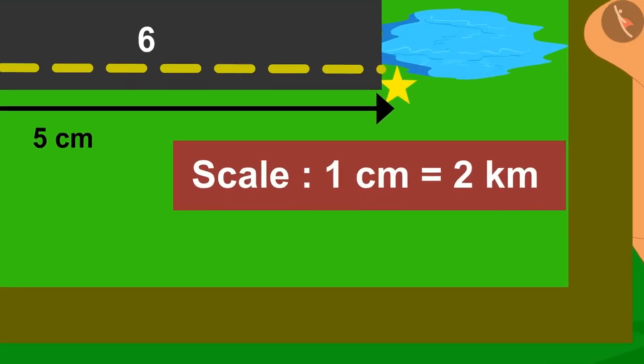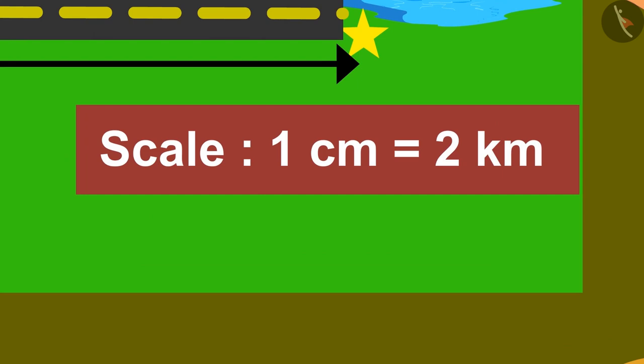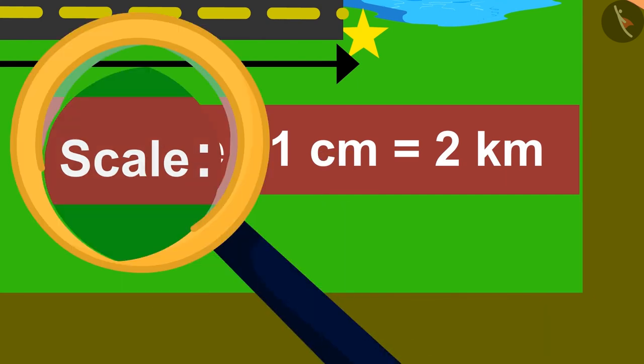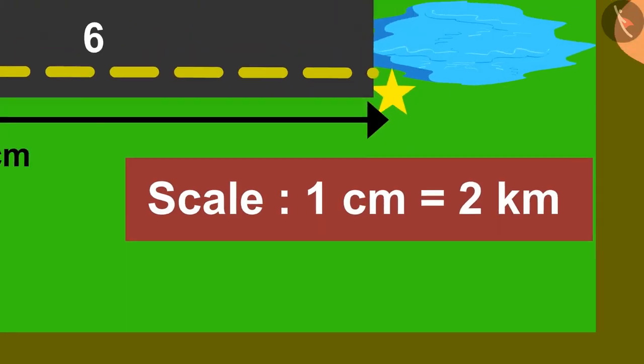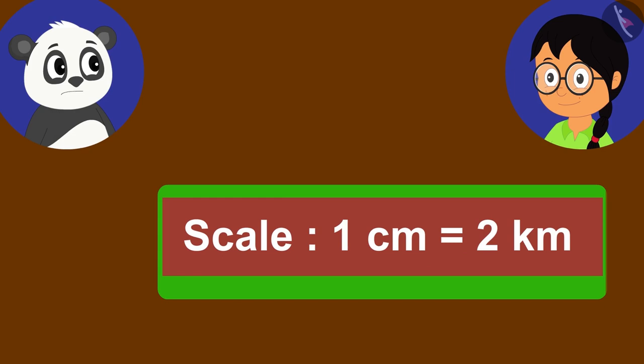Meenu then draws Golu's attention to the scale written on the map. On the scale, it was written 1 cm equals 2 km. What is this? Is this a scale? What is a scale?